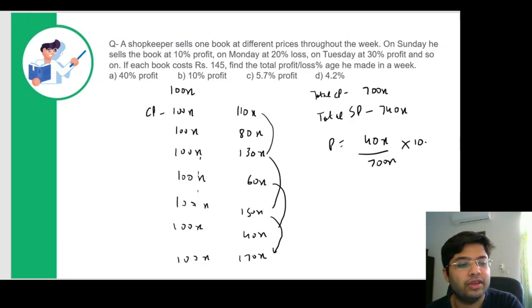So profit percentage, we'll just multiply this by 100, cancel this out, cancel this out. This comes out to be 40 by 7%, which would be somewhere around 5.7%. So option C would be the answer.